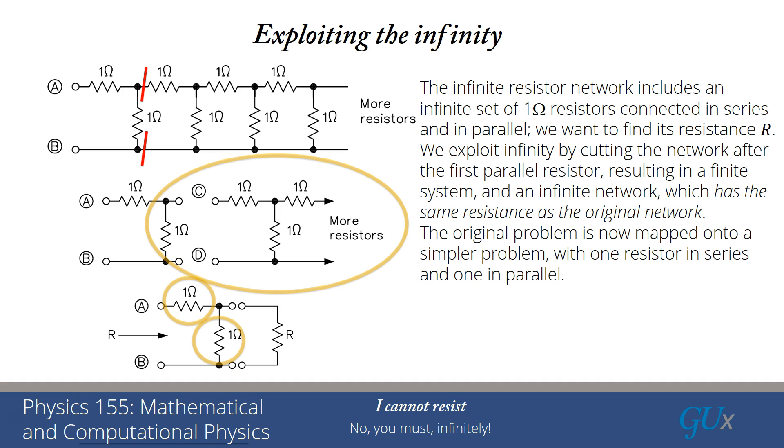Now we have to use the rules for resistance. When we have resistance in parallel, we add the inverse of the resistances. When we have resistance in series, we add the resistances themselves. So the 1 ohm resistor at the top is in series with two parallel resistors, the 1 ohm resistor and the R resistor.